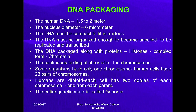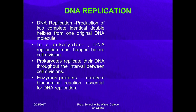The human DNA is almost 1.5 to 2 meters long, while the nucleus diameter is only 6 micrometers. So DNA must be compact to fit in the nucleus, yet organized enough to become uncoiled to be replicated and transcribed. DNA is packed along with protein histones to form chromatin. The continuous folding of chromatin forms chromosomes. Some organisms have only one chromosome, while humans have 23 pairs of chromosomes. Humans are diploid — each cell has two copies of each chromosome, one from each parent. The entire genetic material is called the genome.